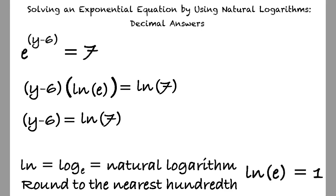We can continue isolating the variable by adding 6 to both sides, yielding y equals ln of 7 plus 6. Lastly, we input this equation into the Alex graphing calculator to result in y equals 7.95 after rounding to the nearest hundredth.